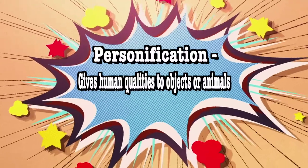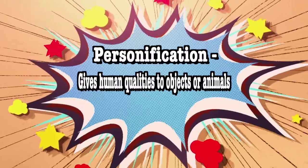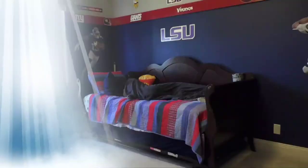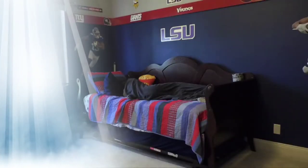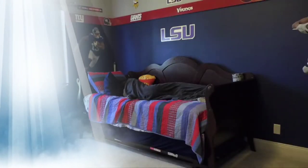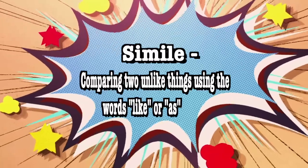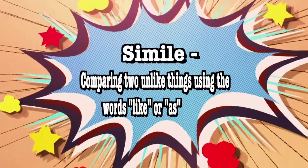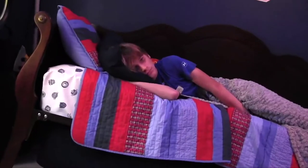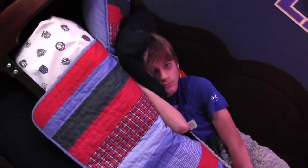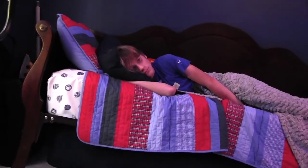You can also use personification, which gives human qualities to objects or animals: 'The sunlight peeked through the blinds at Milo as he slept peacefully in bed.' Finally, try using a simile, which is comparing two unlike things using the words like or as: 'Milo's world spun out of control like a washing machine, churning and turning its prey.'